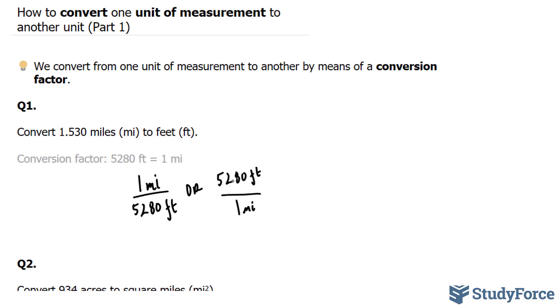So in our case here, we have 1.530 miles, which I'll represent as mi. And what you have to do is multiply this number by one of these two versions. But how do we pick the right one? Let's take, for example, the first one.